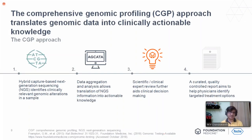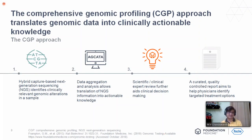The comprehensive genomic profiling approach translates genomic data into clinically actionable knowledge. The process starts with hybrid capture by NGS to identify relevant genomic alterations. Data aggregation and analysis translates NGS information into actionable knowledge. Scientific and clinical expert review aids in clinical decision making, with quality control throughout. The report suggests to the clinician which drug to give for a particular mutation.